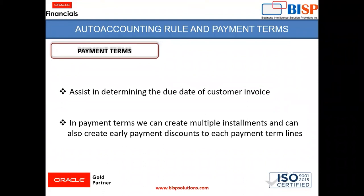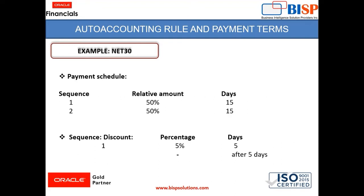Payment term — what does it mean? It helps us to determine the due date of a customer invoice. There are various payment terms which we can create in the instance. For example, we can create a payment term named Immediate, which means the invoice is due today. In a similar manner we can create payment terms like Net 30 or Net 45, meaning the invoice is due after 30 or 45 days. In payment terms we can create multiple installments and also create early payment discounts for each payment term line.